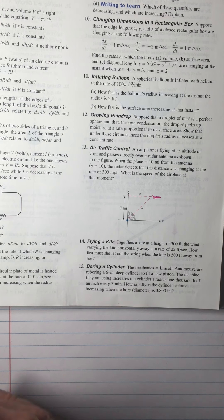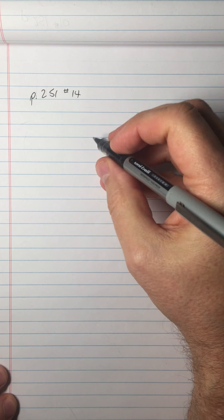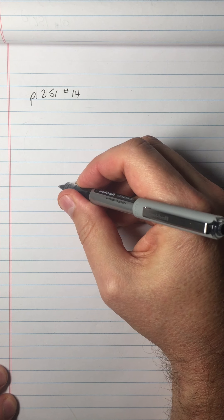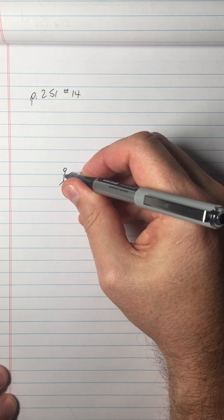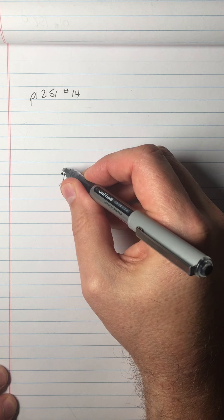How fast must she let out the string when the kite is 500 feet away from her? All right, they didn't draw a picture. How am I supposed to do this problem if they didn't draw a picture? I guess I'll have to draw my own picture. So we'll draw a picture, and it's often a good idea to start these problems drawing a picture.